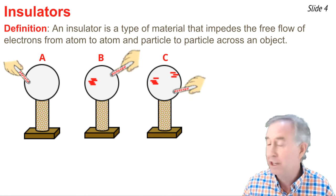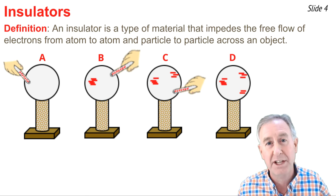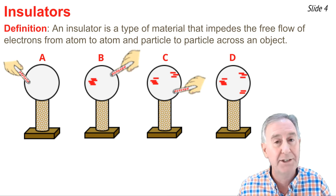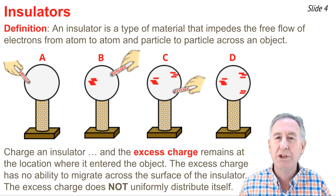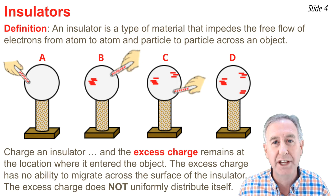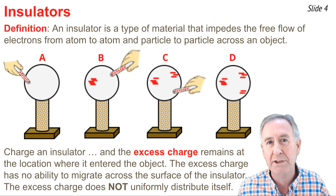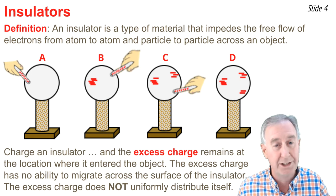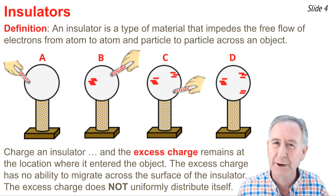If we were to touch it a third time, we would now have three locations of excess negative charge, and that charge would remain exactly at the point of contact. The point here is that when you charge an insulator, the charge does not evenly distribute itself across the surface of that insulator, because insulators do not permit electrons to move from atom to atom and particle to particle.